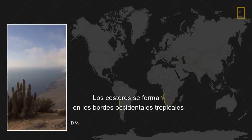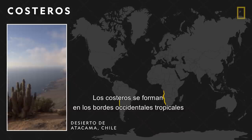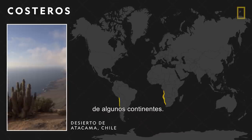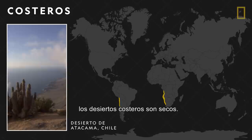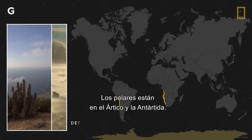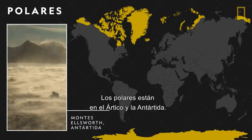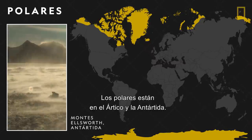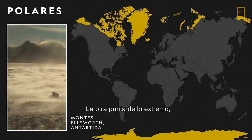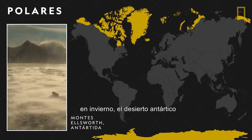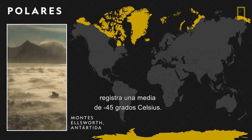Coastal deserts form alongside the tropical western edges of certain continents. Despite their proximity to water, coastal deserts remain dry. Polar deserts are found in the Arctic and Antarctic — the other end of the extreme — with winter temperatures in the Antarctic desert averaging around minus 50 degrees Fahrenheit.